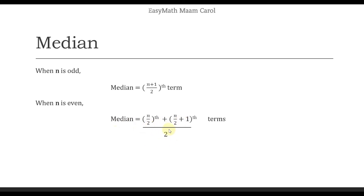This time, meron siyang computation. Pero kailangan, pick-upin niya muna yung n over 2 na term at saka n over 2 plus one term. So, let's do an example para makita natin kung paano yung process. If you are going to create a program, alam nyo yung algorithm or step-by-step process na ginagawa ng system.